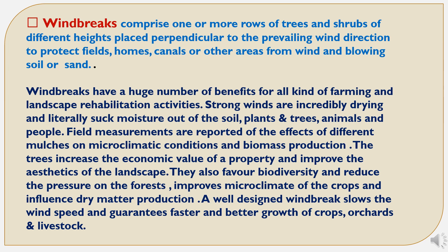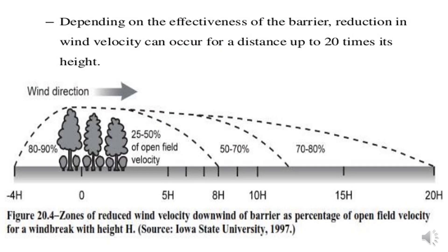Windbreaks also favor biodiversity, reduce pressure on forests, improve microclimate of crops, and influence dry matter production. A well-designed windbreak slows the wind speed and guarantees faster and better growth of crops, orchards, and livestock. Regarding the impact on wind velocity, depending on the effectiveness of the barrier, reduction in wind velocity can occur for a distance up to 20 times its height. From the windbreak to a distance of 20 times the height, wind velocity is only 70 to 80 percent of the original, meaning a 20 to 30 percent reduction.